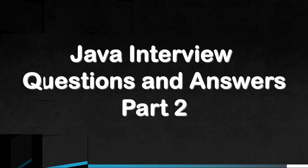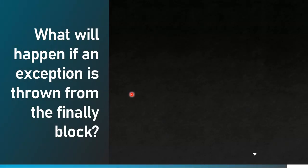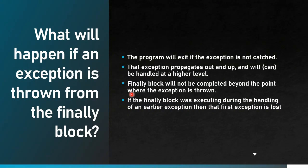First question: what will happen if an exception is thrown from the finally block? If an exception is thrown from the finally block and we are not handling it, the program will exit, or the exception propagates out and up to be handled at a higher level. The finally block will not be completed beyond the point where the exception is thrown.